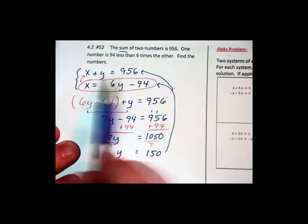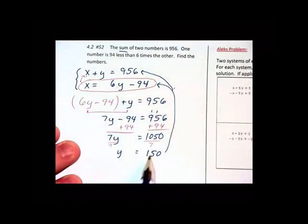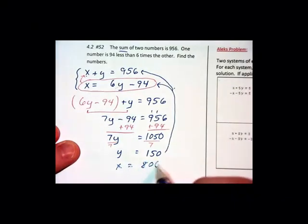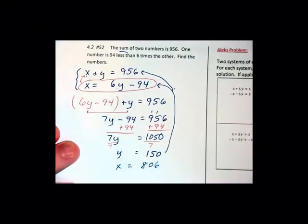Oh, my two numbers add up to 956. 150 plus what? Well, it's still a little bit of a mess. We're going to get 806. Together those add up to the 956.